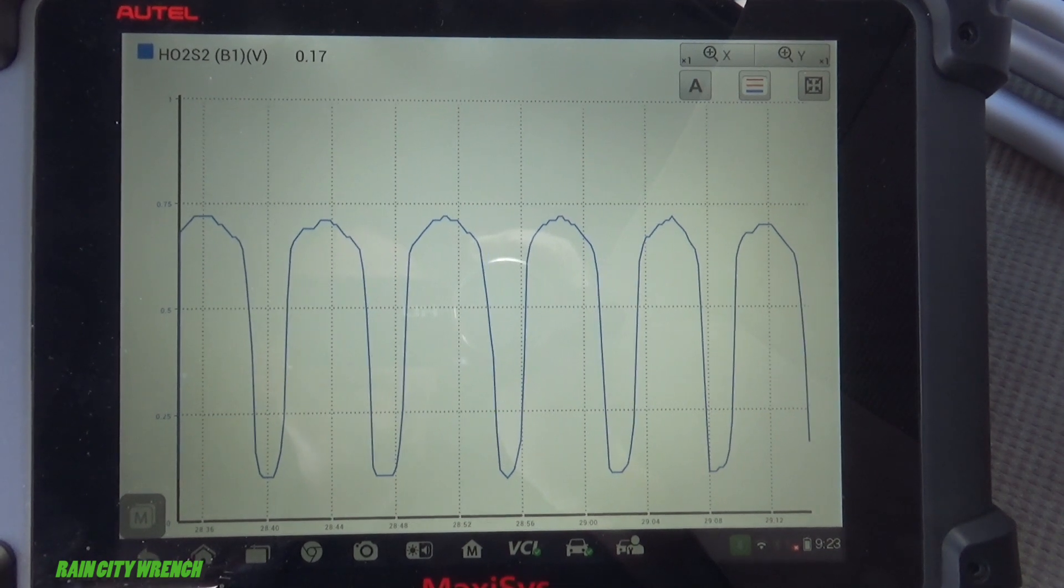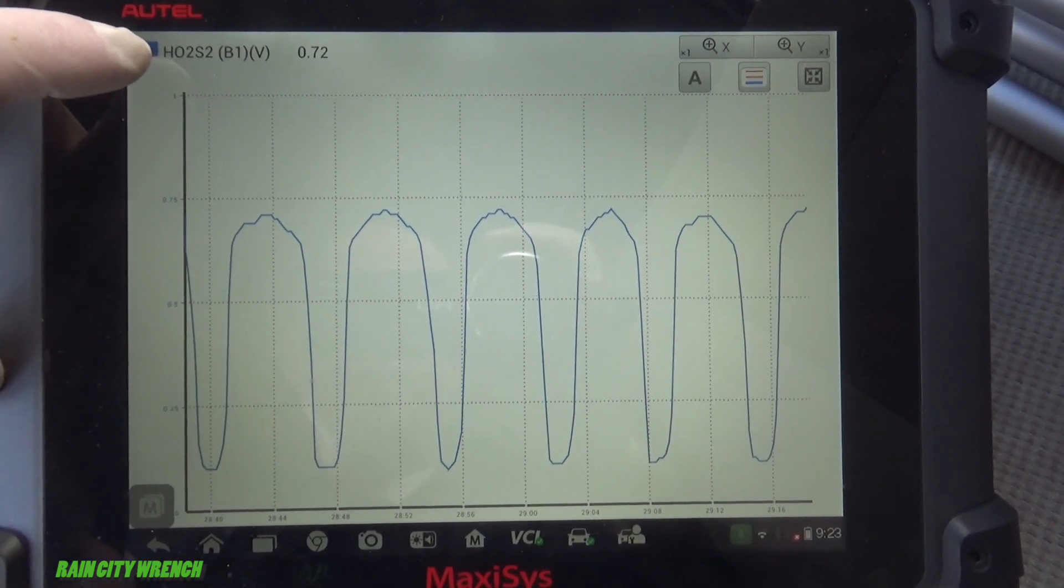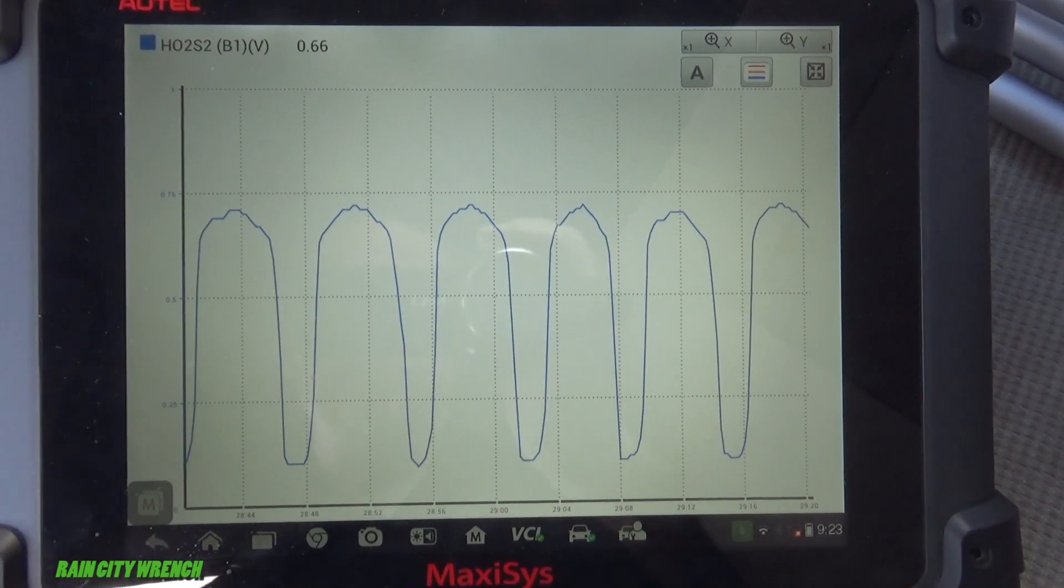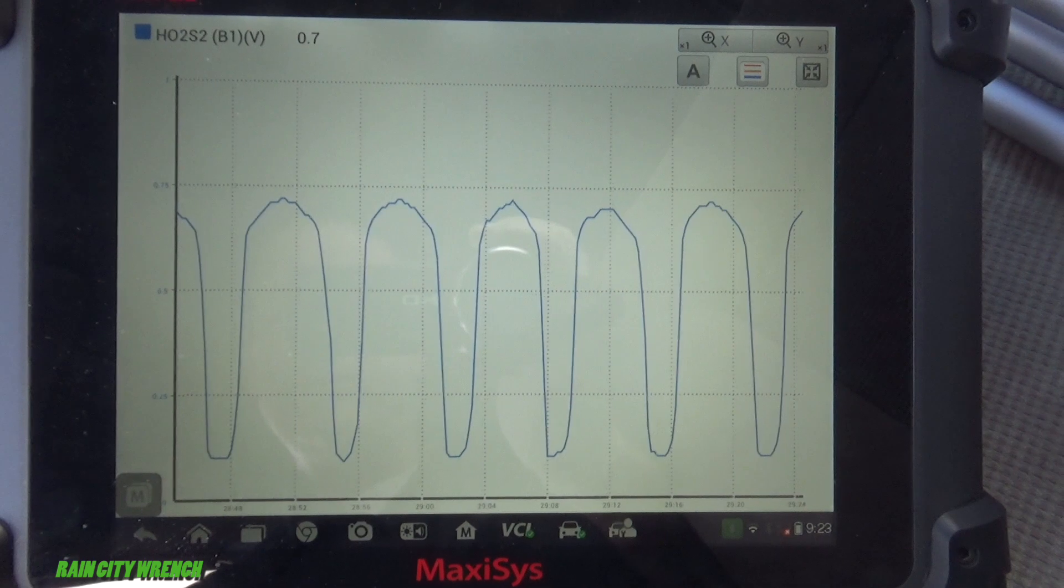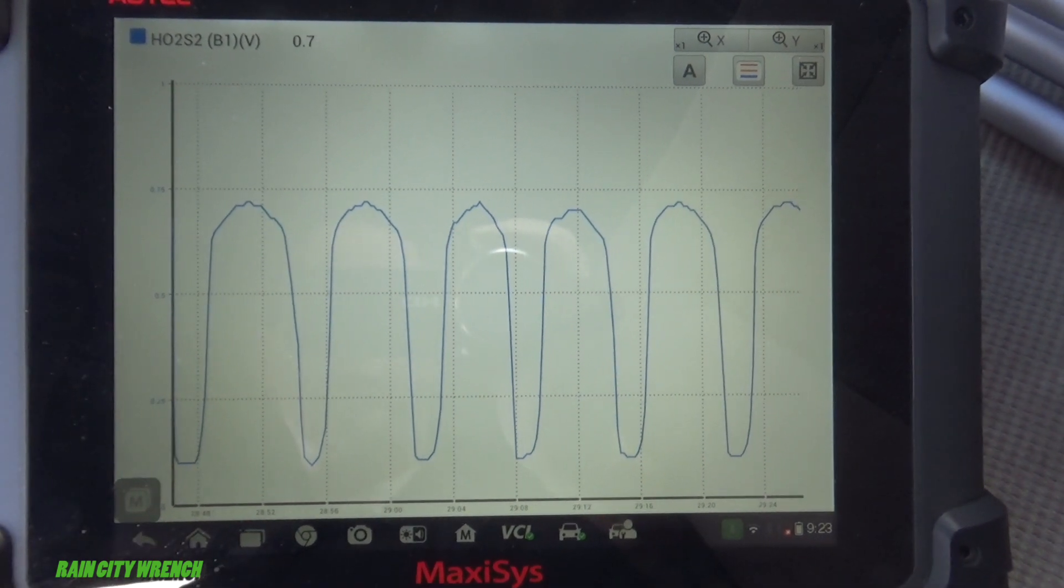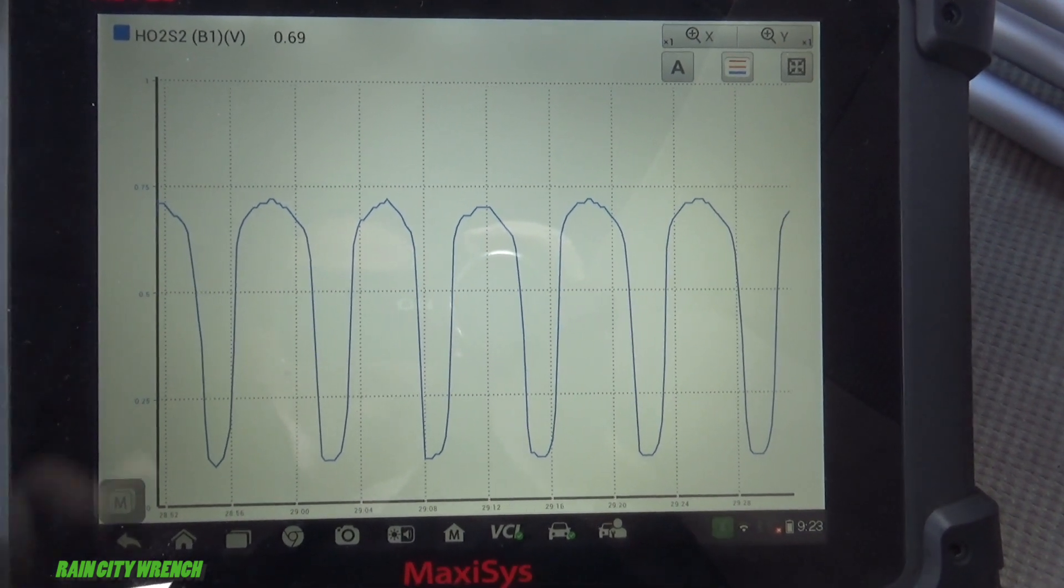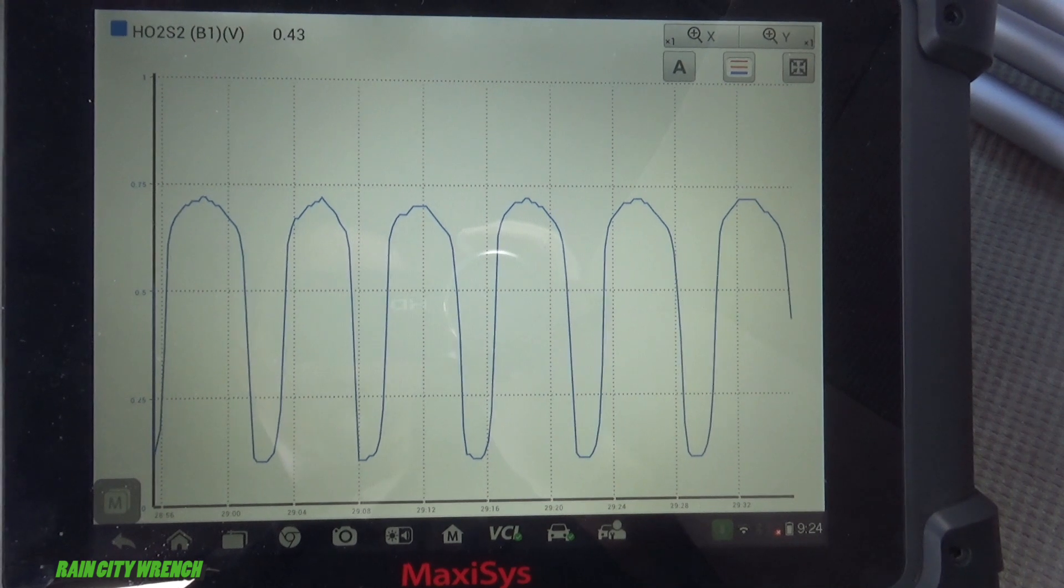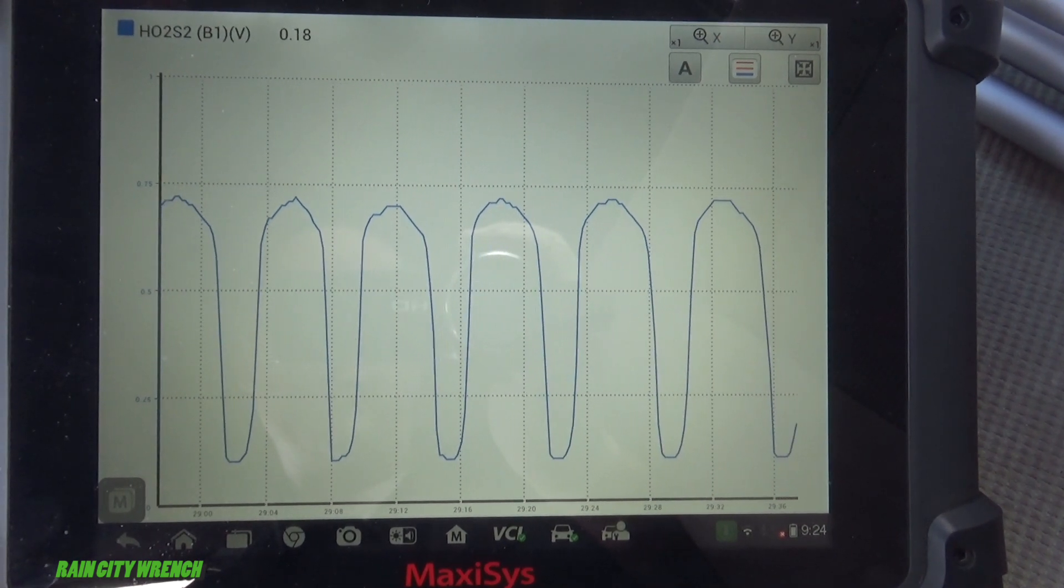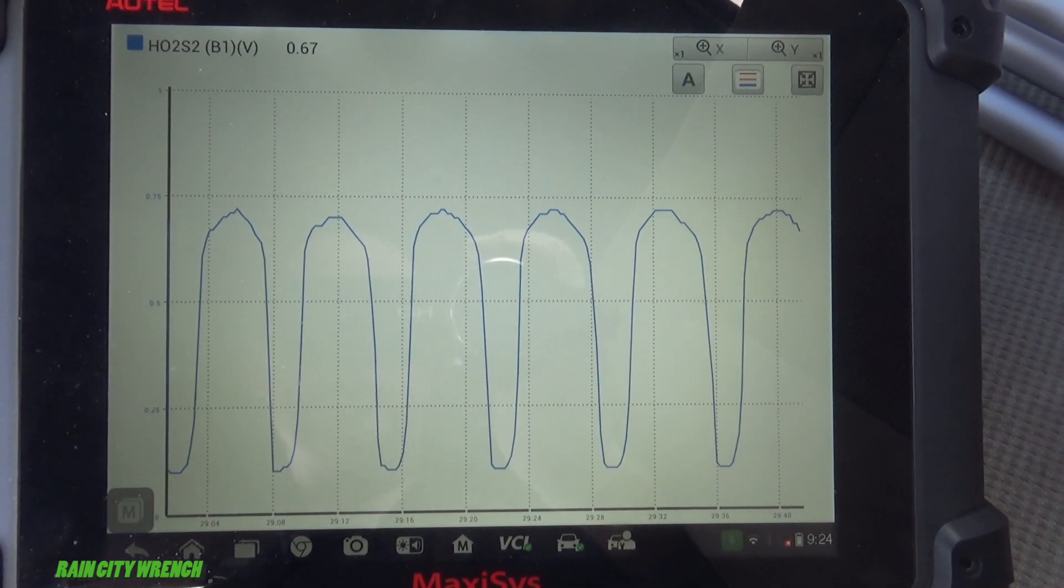Alright, I've got the engine warmed up. We're idling. We're looking here at the downstream oxygen sensor. You can see it's switching nice and consistent across 450 millivolts. It's going like about 100 millivolts to 700 millivolts. That's what an upstream conventional oxygen sensor should look like. It should not look like that on the downstream.